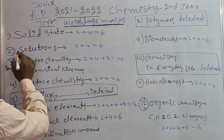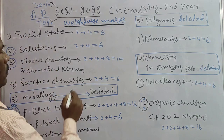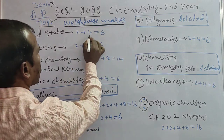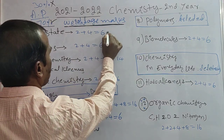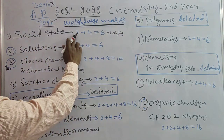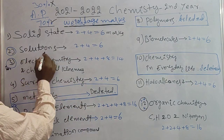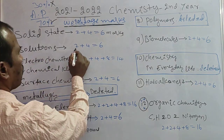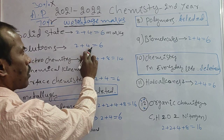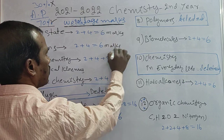First chapter: Solid State. In this topic, very short answers 1, short answers 2 — total marks are 6 marks. Second topic: Solutions — very short answers 1, short answers 1 — total marks are also 6 marks.